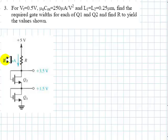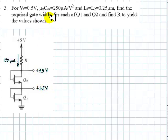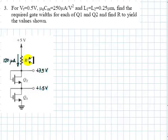Also find the value of this resistor to yield the values shown: 120 microamps, and the voltage here is 3.5 volts, and the voltage here is 1.5 volts. We need to find the gate width for Q1 and Q2 so that those currents and voltages are what they are, and also find this resistor value.